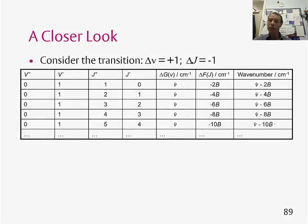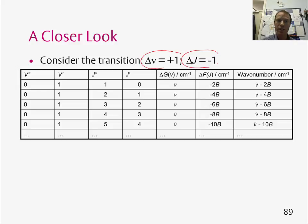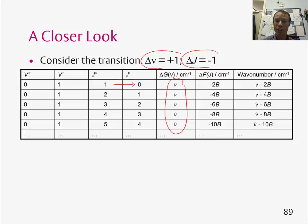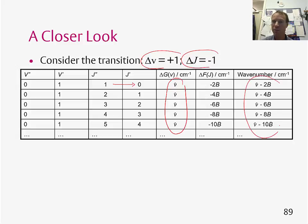If we do the same for the other part of the spectrum — again Δv equals plus 1, but here Δj equals minus 1 — most of the table is the same, but here we're going from j equals 1 to j equals 0, and so on. The vibrational component is again just ν̃. Working out the energies associated with the rotational transitions, the change in wavenumber is minus 2B, minus 4B, minus 6B, and so on, giving us the transition wavenumbers for this branch.